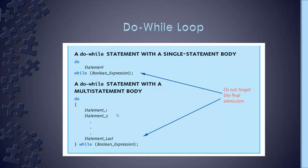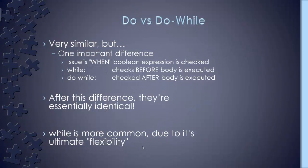The do-while loop: you write 'do,' then the statements in curly braces, then end with 'while' and the boolean expression. Because the computer reads top to bottom, as soon as it sees 'do,' it runs the body once before reaching the expression. Do-while is not as popular as for or while. The big difference is when the boolean expression is checked: with while it's checked before the body executes; with do-while it's checked after — meaning the body always runs at least once.